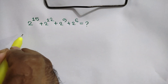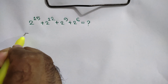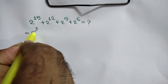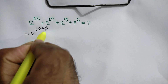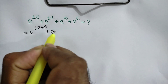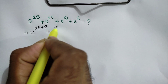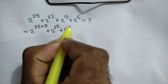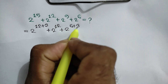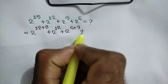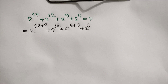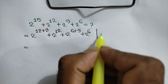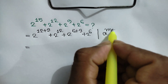2 to the power 15 can be written as 2 to the power 12 plus 3, plus 2 to the power 12, plus 2 to the power 9 which can be written as 6 plus 3, plus 2 to the power 6.